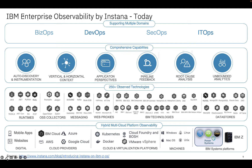I wanted to pull up this slide to give you a feel for the capabilities of the product. It automatically discovers all of these 250 observed technologies — they call them sensors. There's an agent that runs on a host, and that agent downloads all these sensors as it detects what's going on on that virtual machine or host, and then stitches everything together in an end-to-end hybrid, multi-cloud, across premises, across technology stacks, across hardware, across operating systems, across container-based platforms like Kubernetes and Cloud Foundry. It also supports IBM Power hardware, including IBM i, AIX, Linux, and IBM Z. Really cool product.